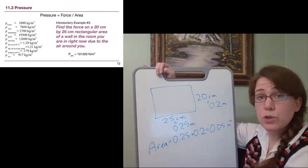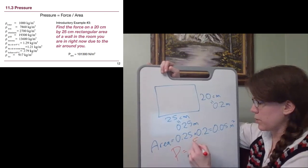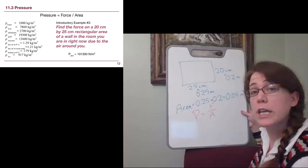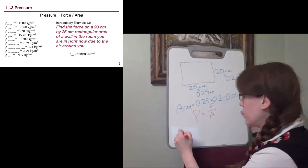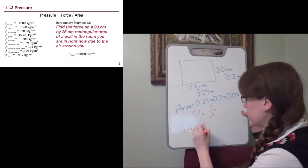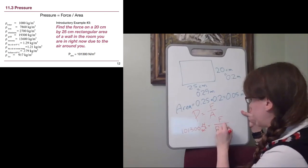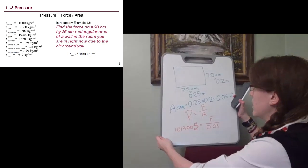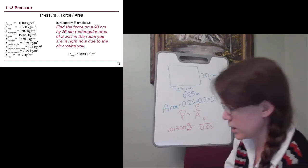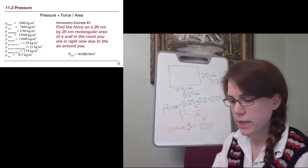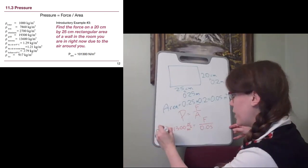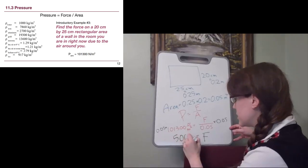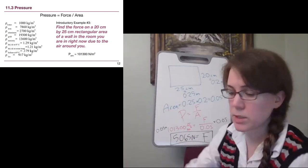If we think about our brand new equation, pressure, capital P, is equal to force, capital F, over area, capital A. The pressure, if we are talking about air, we can assume we are talking about atmospheric pressure. So we have 101,300, this unknown force, and then our area here. With our calculators, we get that the force, when we multiply both sides by 0.05, the force is 5,065 newtons.